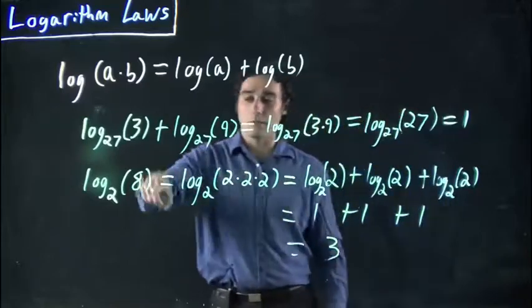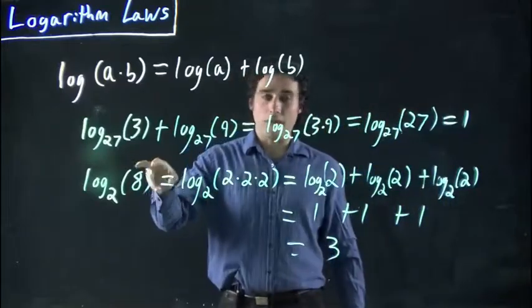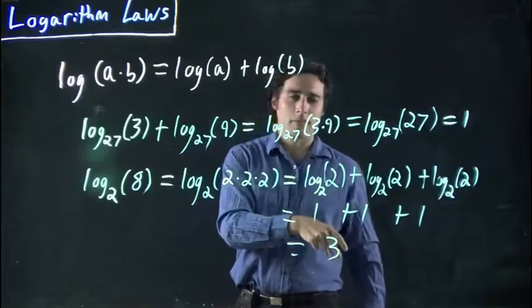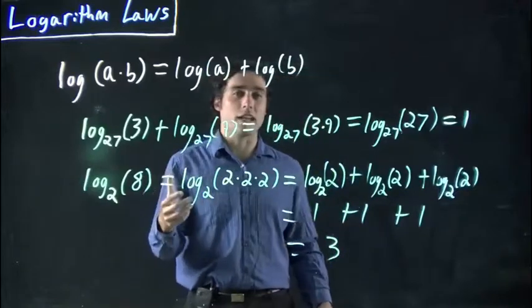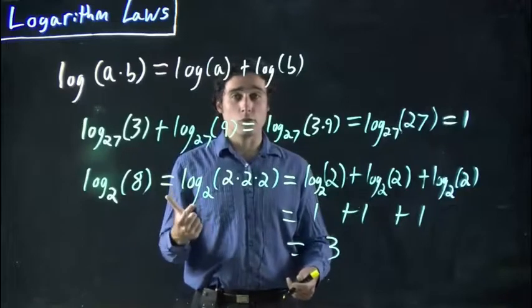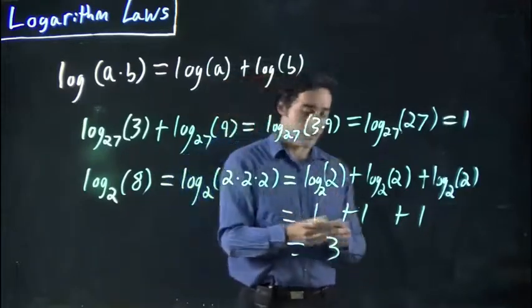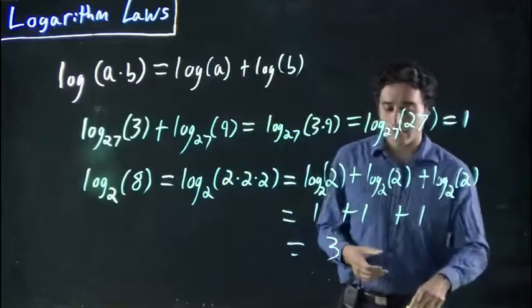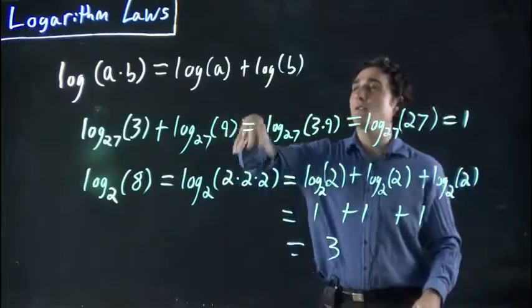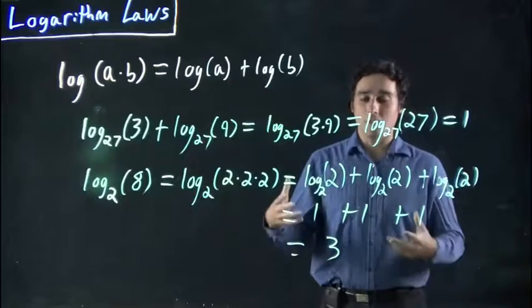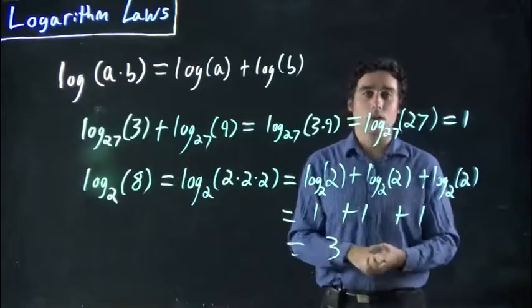So log to the base 2 of 8 is 3. And I think that makes sense. 2 to the power of what is 8? It's 3. Well, 2 times 2 times 2, that is 8. So it does match up. It does seem correct. And this is just showing you the first of the logarithm laws, showing you some of the ways it might be used. So see you in the next video.